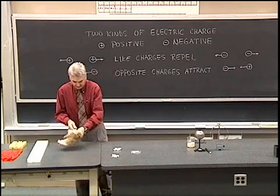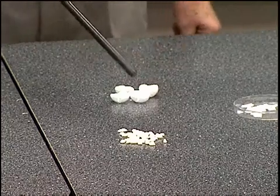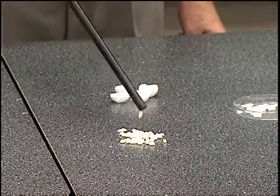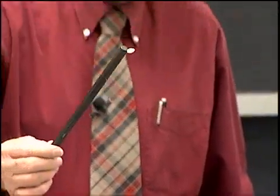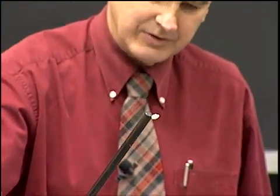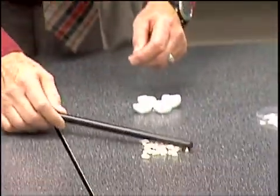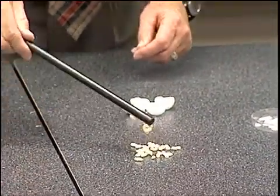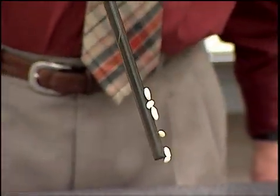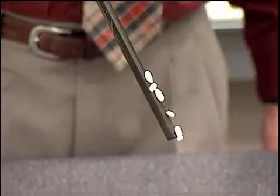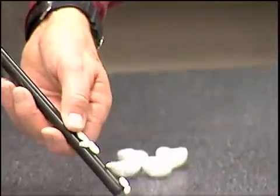Let me demonstrate that. We see that the charged rod attracts the neutral pieces of puffed wheat. And this is what electrostatic clinging is all about, charged objects attracting neutral objects.